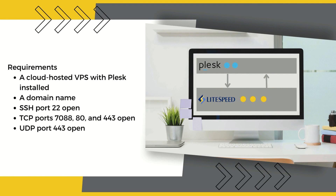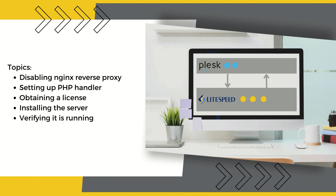Lastly, you'll need to open the following ports at the server level and at the Plesk firewall: 22 for SSH, 7088, 80 and 443 for TCP, and 443 for UDP. Once these prerequisites are dealt with, we can dive into the following topics: disabling the nginx reverse proxy, checking the PHP handler configuration, obtaining a LiteSpeed enterprise license, installing LiteSpeed web server, and verifying that LiteSpeed web server is running.